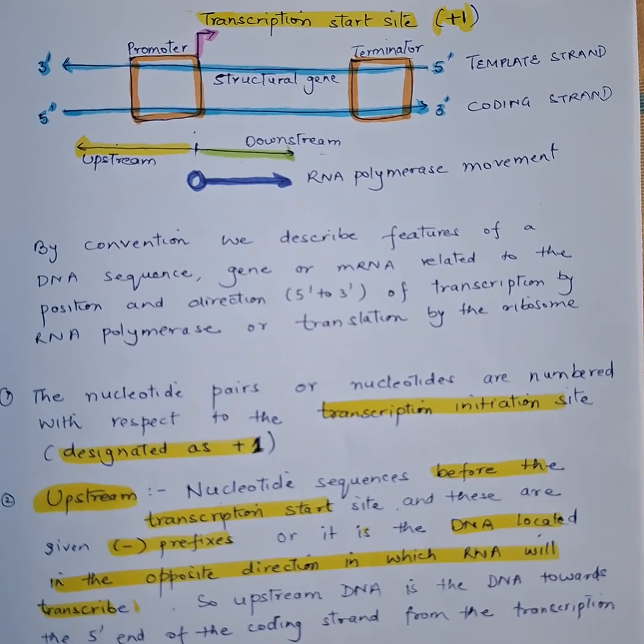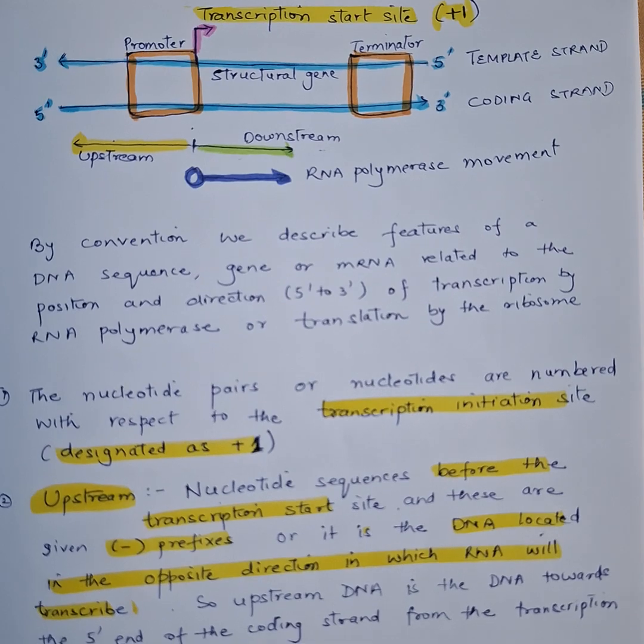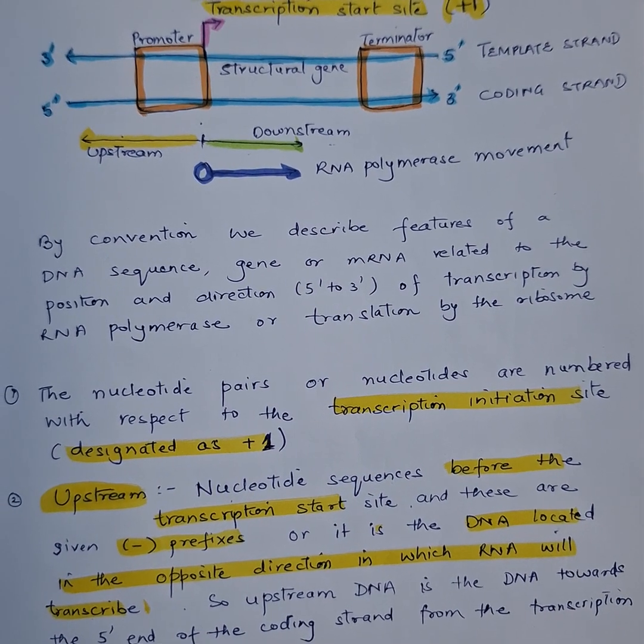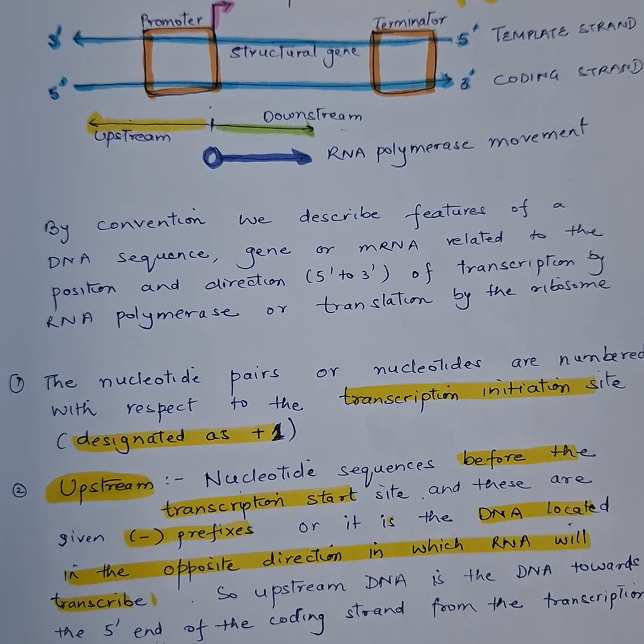Hello everyone, let's discuss upstream and downstream. You can refer to the diagram here. By convention, we describe the features of a DNA sequence, gene, or messenger RNA related to the position and direction of transcription by the RNA polymerase.